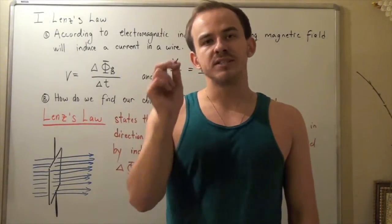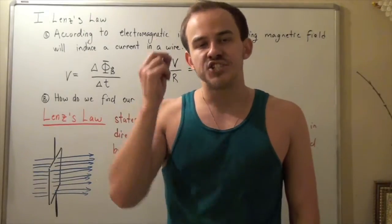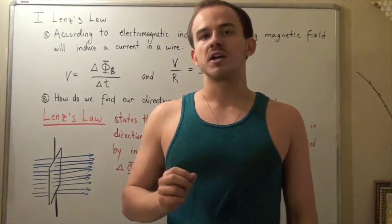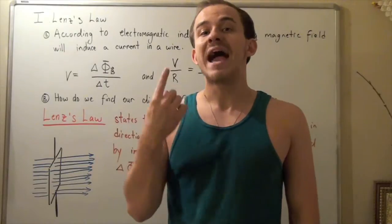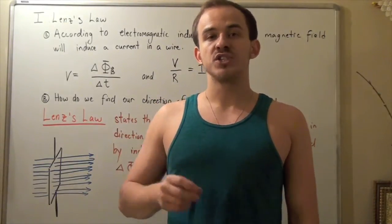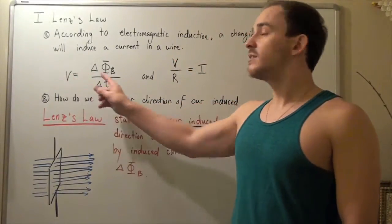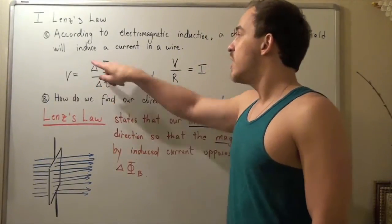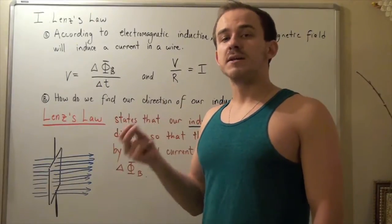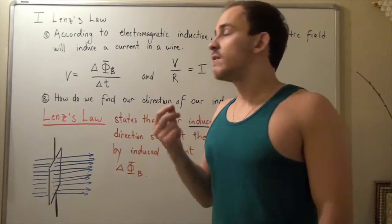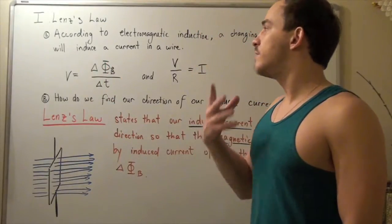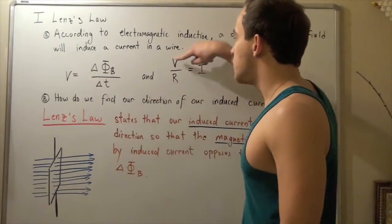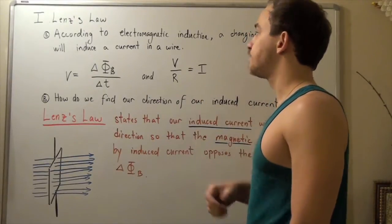We already spoke about electromagnetic induction, which states that only a change in magnetic field will induce a current and a voltage in a wire. If we want to find the magnitude of our voltage induced by a change in magnetic field, we use Faraday's law. Faraday's law states that the magnitude of induced voltage equals the change in magnetic flux divided by the change in time. To find the magnitude of our induced current, we use Ohm's law — we divide voltage by resistance.